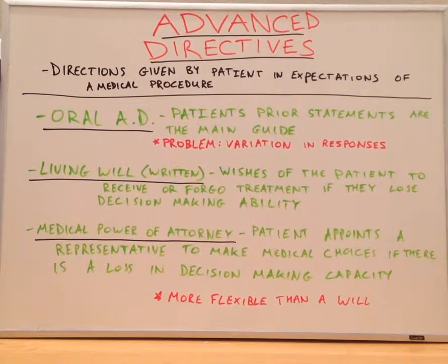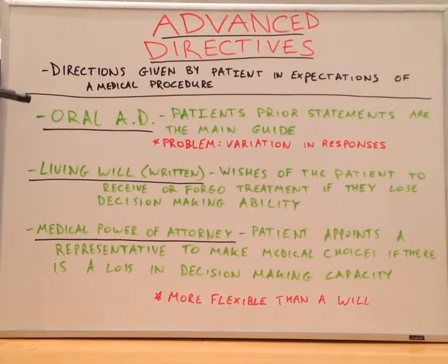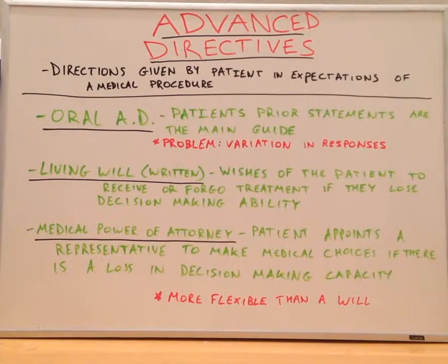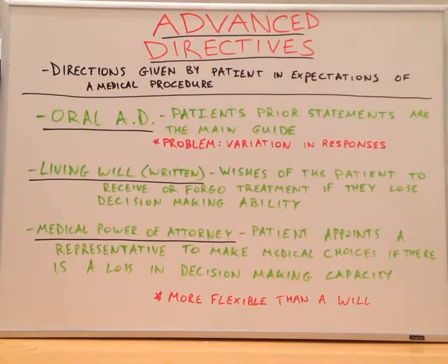We have a few different types of advanced directives. The first is the oral advanced directive, in which a patient's prior statements are the main guide on decisions regarding medical procedures. Typically, family members as well as friends would be asked by physicians as to what a patient's intentions are.